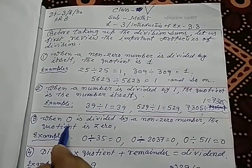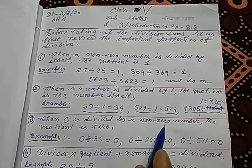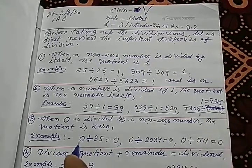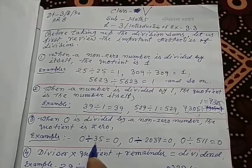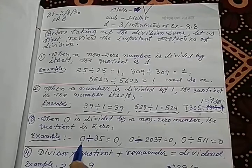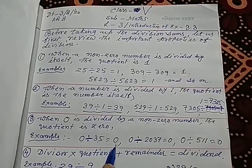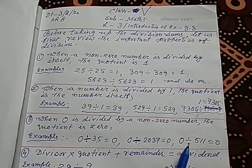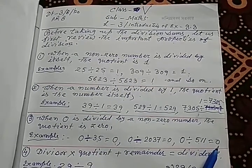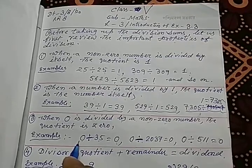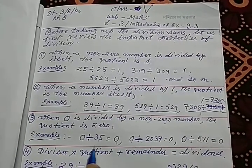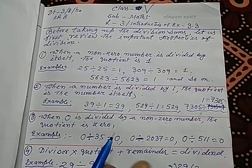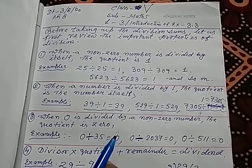Property number 3: when 0 is divided by a non-zero number, the quotient is 0. If you divide 0 by any number, the quotient will be 0. Notice: 0 divided by 35 is 0; 0 divided by 2037 is 0; 0 divided by 511 is 0. However, if you divide 0 by 0, that will be infinity — that is undefined.